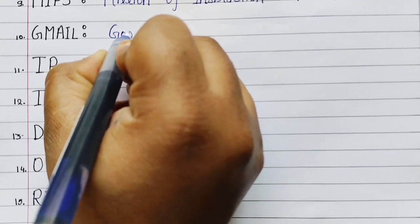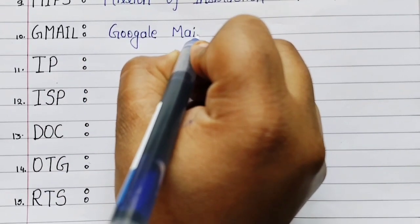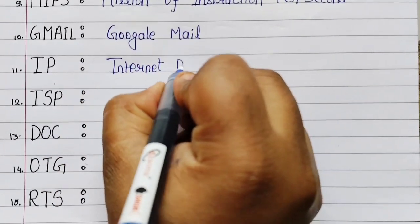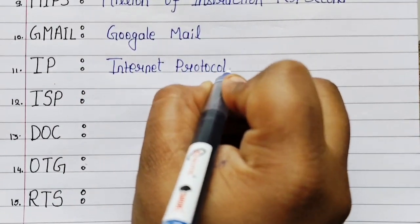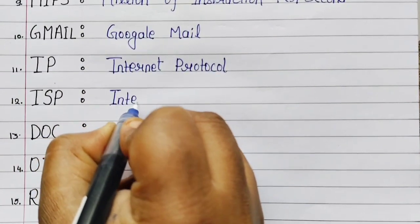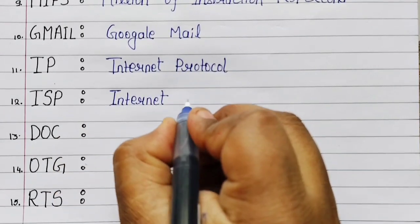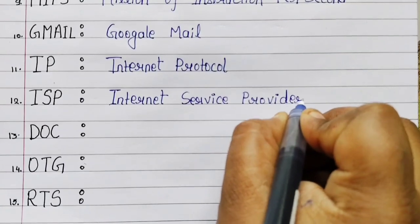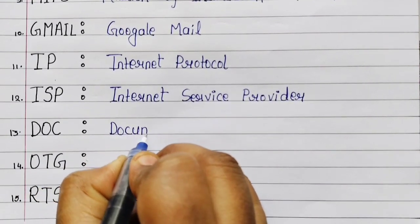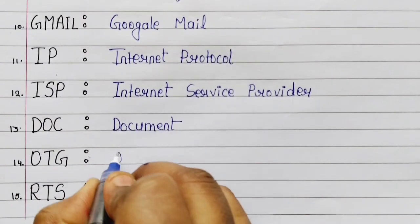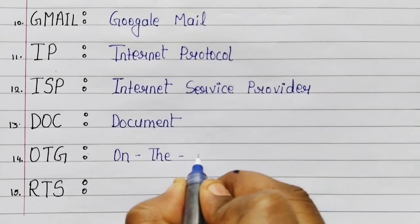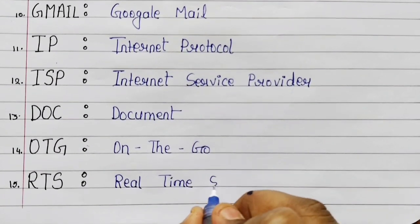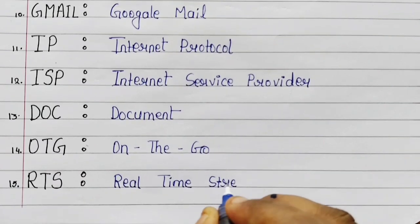Number 10: Gmail - Google Mail. Number 11: IP - Internet Protocol. Number 12: ISP - Internet Service Provider. Number 13: DOC. Number 14: OTG - On The Go. Number 15: RTS - Real Time Streaming.